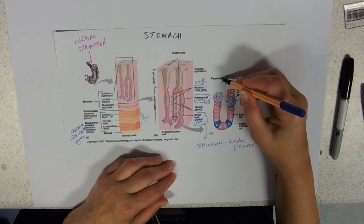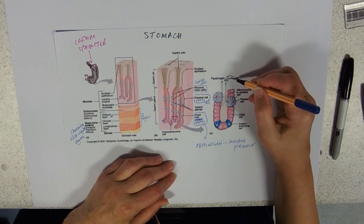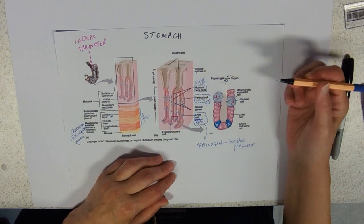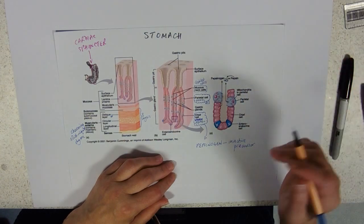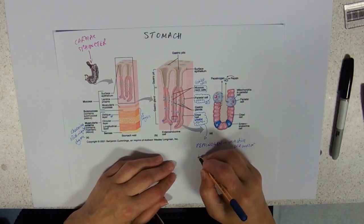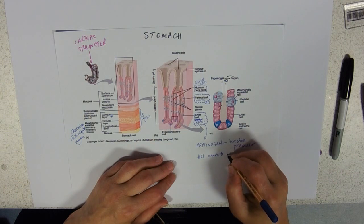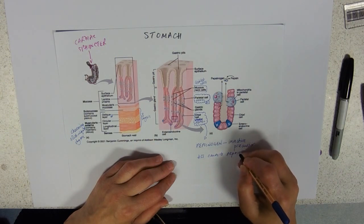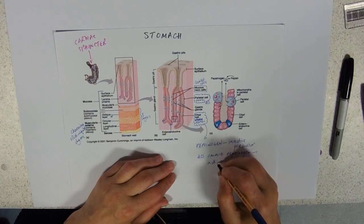In this reaction, hydrochloric acid activates pepsinogen to pepsin. Confusingly, pepsin can also activate pepsinogen to make more pepsin, but don't worry too much about that. As far as you're concerned, hydrochloric acid converts pepsinogen to active pepsin.